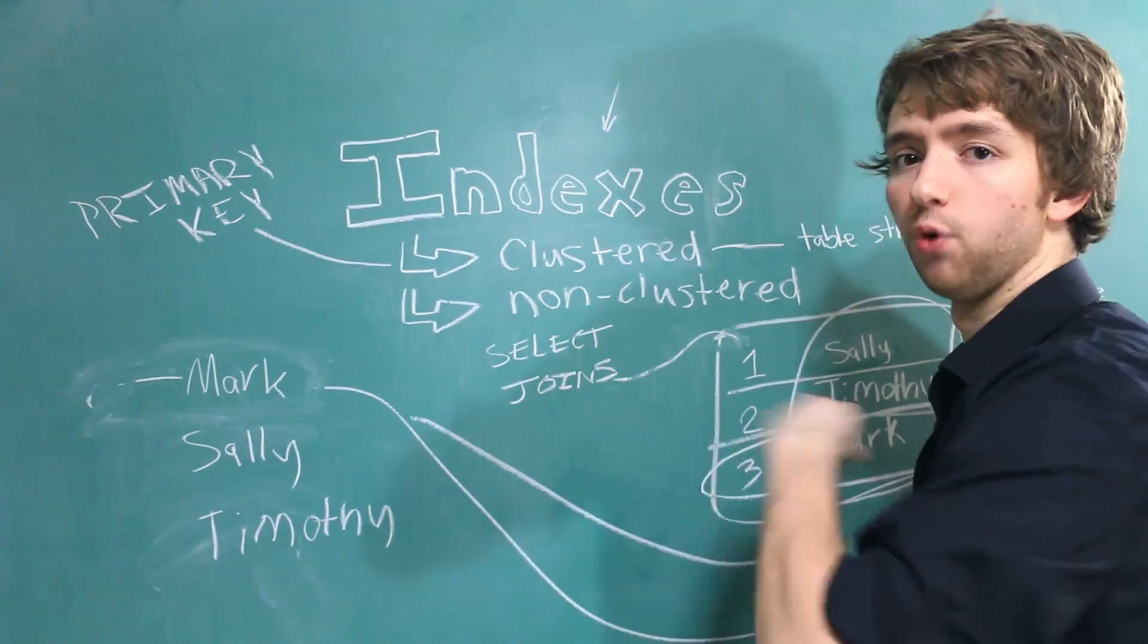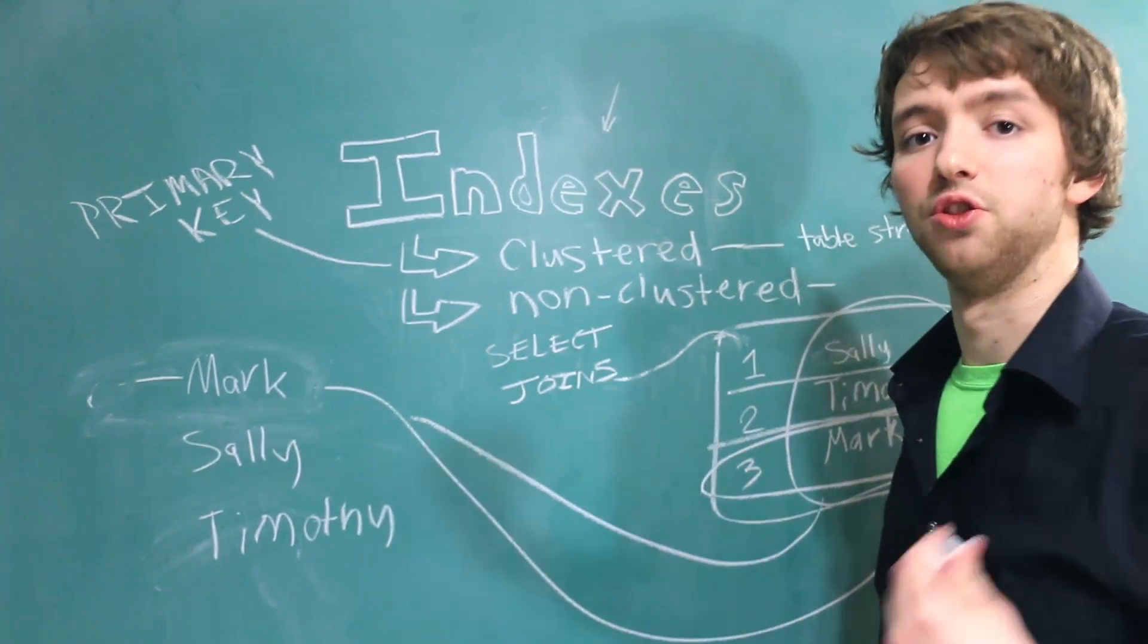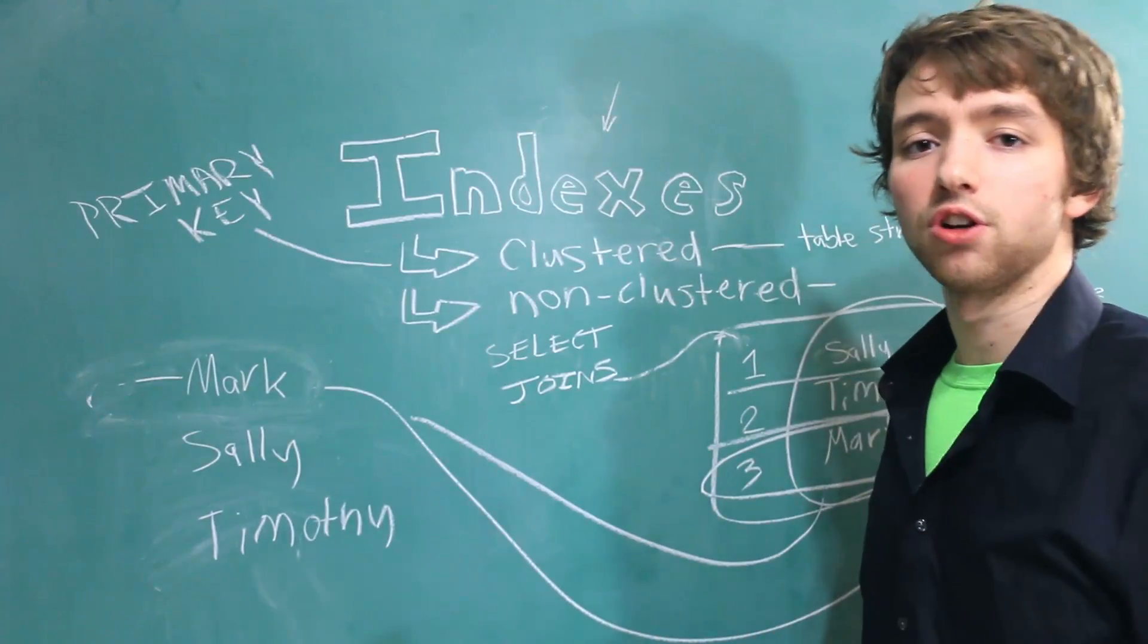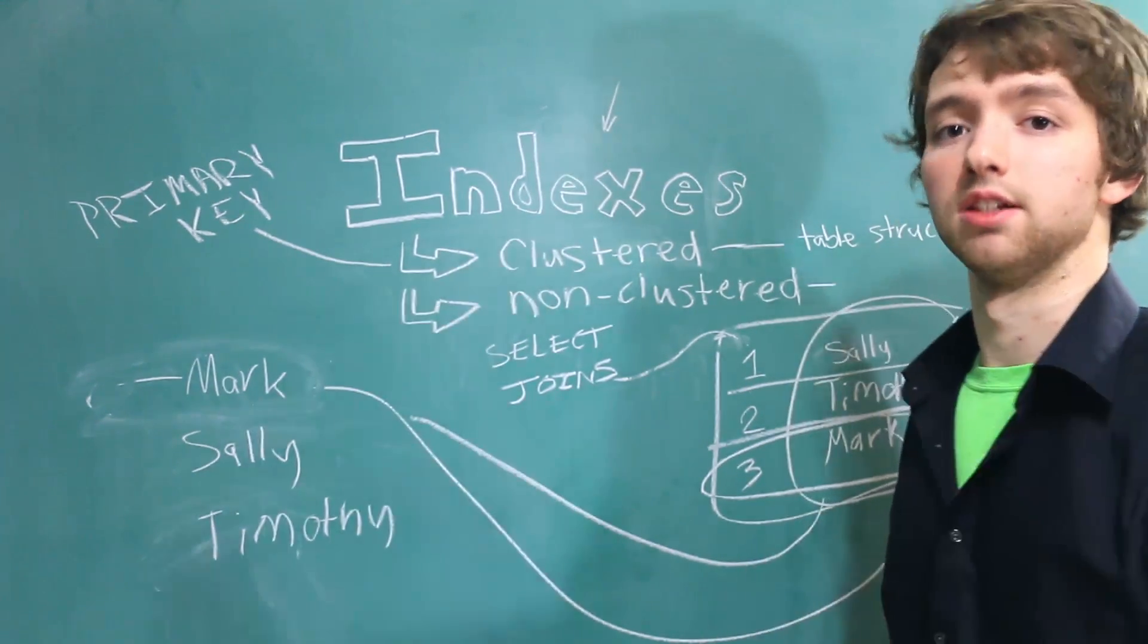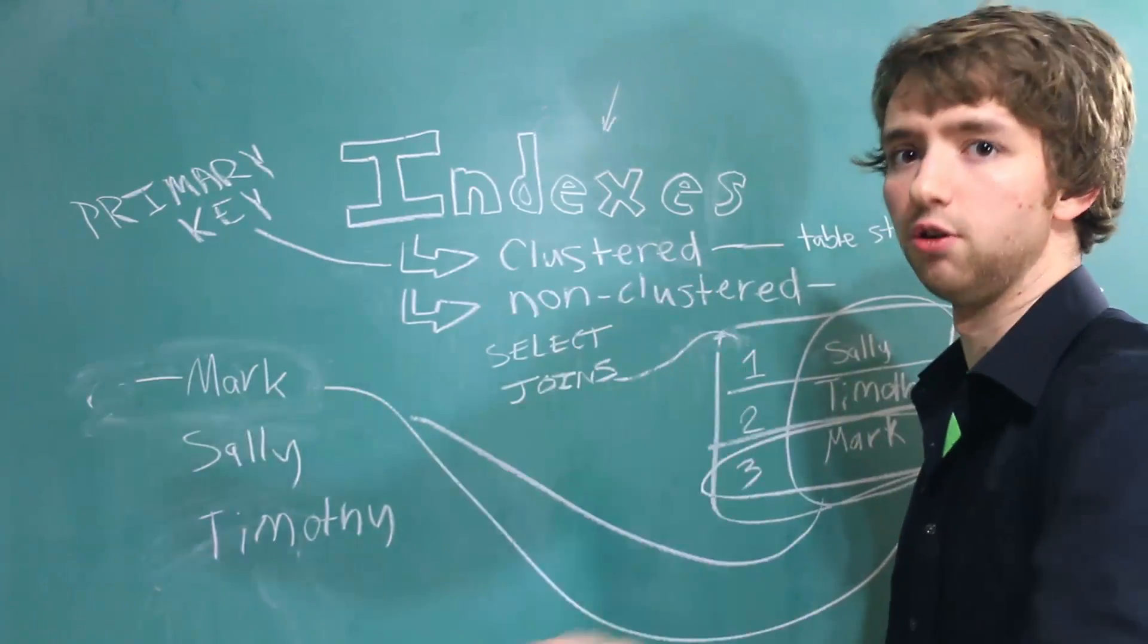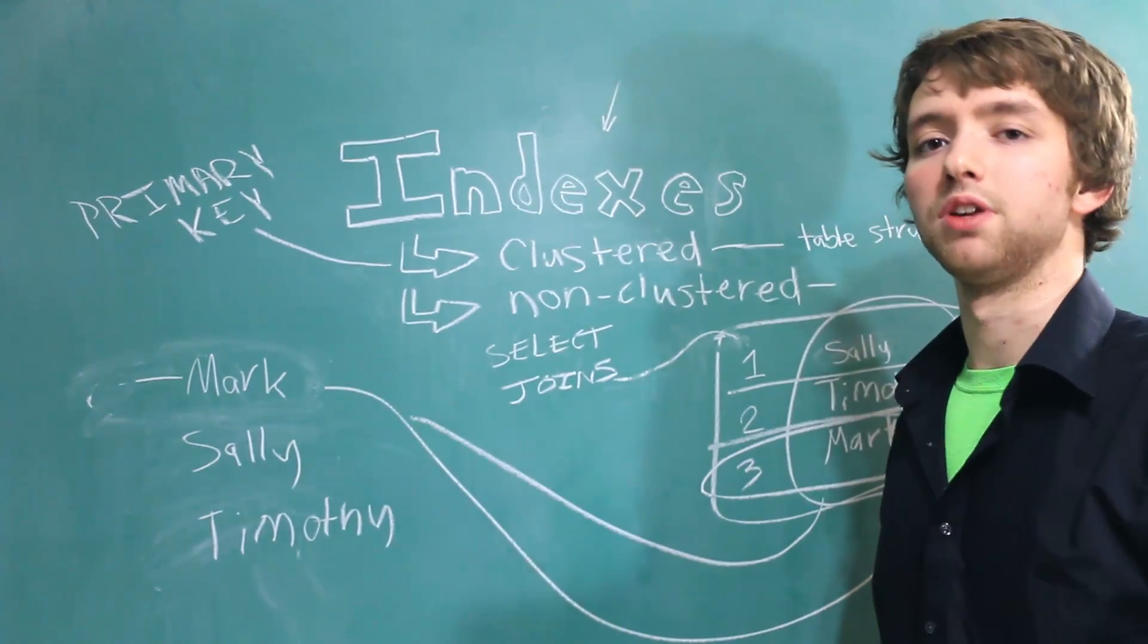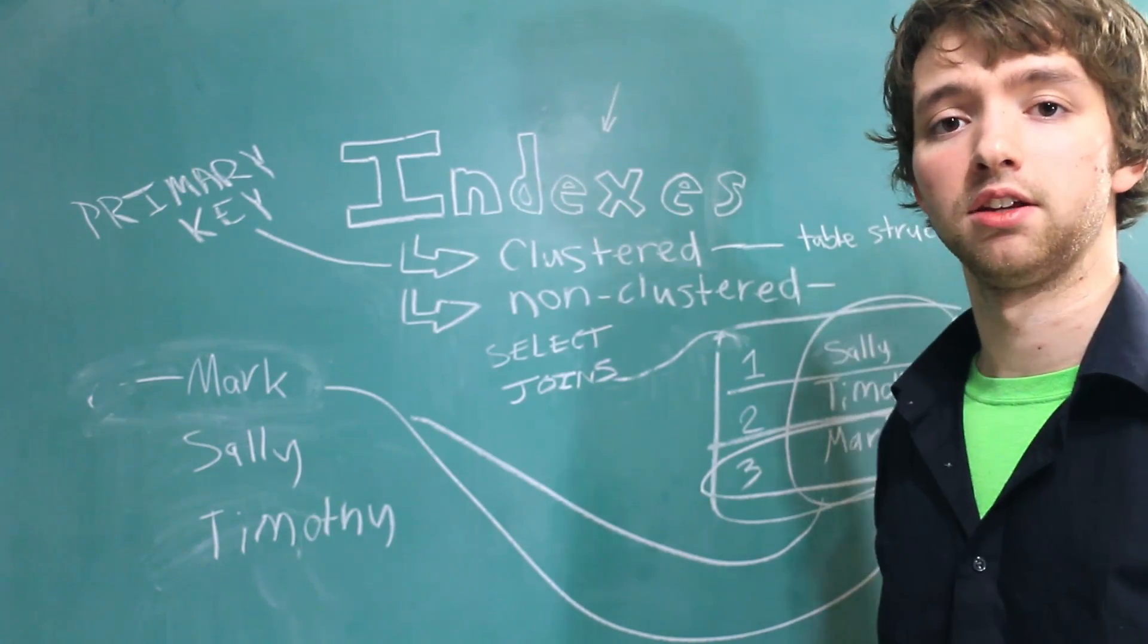The next thing you'll want to consider is any foreign keys. If you're using joins and you're joining foreign keys to primary keys, you'll probably want to make a non-clustered index on those foreign keys. Lastly, the third type of thing you're going to want to index is any other columns you are continually selecting. So if you have some website that continually selects the same data over and over and over again, you might want to consider adding an index on there and seeing if it improves the speed any.